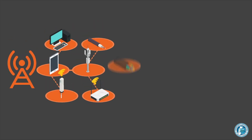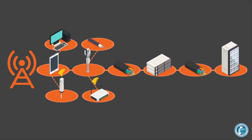Fiber optic networks begin with an end user — anything from a person at their desk to a sensor performing water quality monitoring — providing inputs and receiving information at a terminal through a wired or wireless connection. Those inputs are routed through fiber optic lines, through switching stations and to data hubs and servers all around the world and back almost instantly.